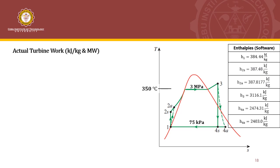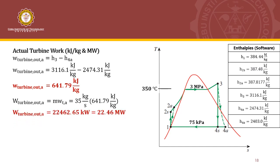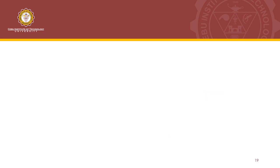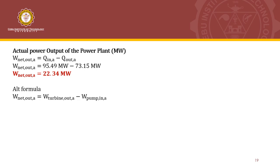For the actual turbine work output, we substitute H3 (turbine inlet) and H4A (turbine outlet). Multiplying by the mass flow rate, the actual turbine power output is 22.46 megawatt. For the actual net power output of the power plant, we subtract the power rejected in the condenser from the boiler power input, giving 22.34 megawatt. This can also be verified using the alternative formula of turbine power output minus pump power input, obtaining the same result.